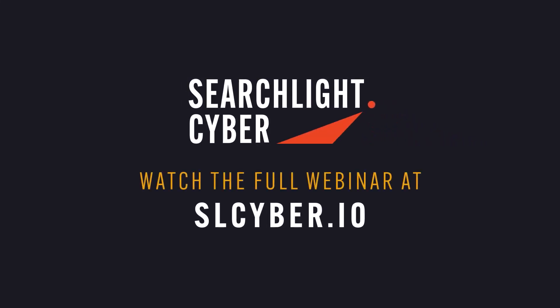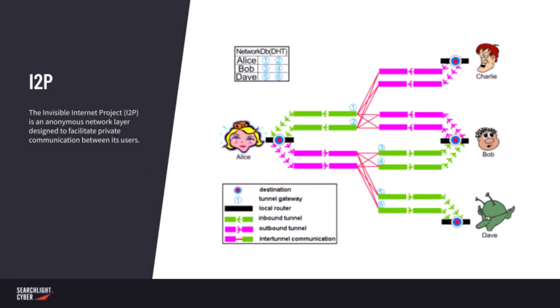You may have also seen in the last year or so, 18 months, a darknet popping up called I2P. I2P has actually been around as long as Tor, if not a little bit longer.